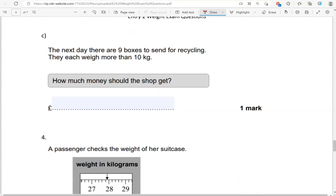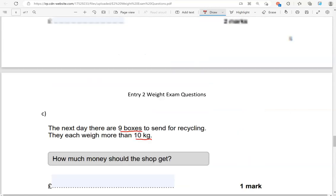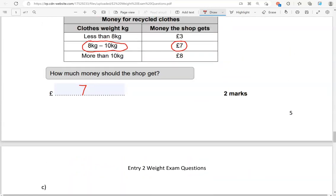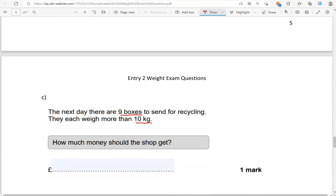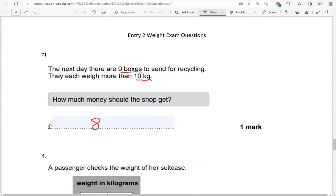The next day, there are 9 boxes to send for recycling. They each weigh more than 10 kilograms. How much money should the shop get? They weigh more than 10 kilograms. They get 8 pounds per box. So 8 times 9 gives us 72 pounds.